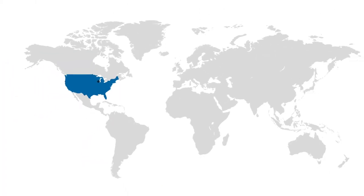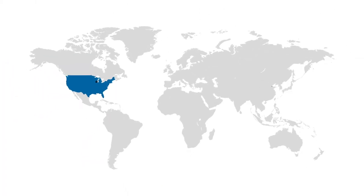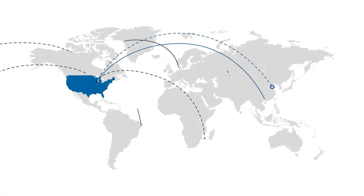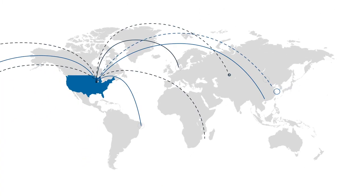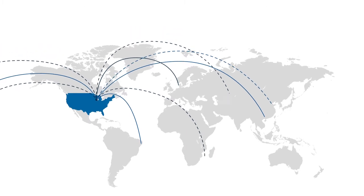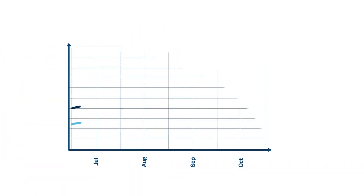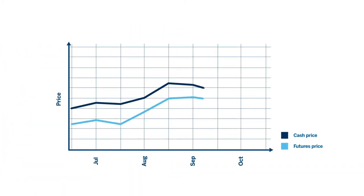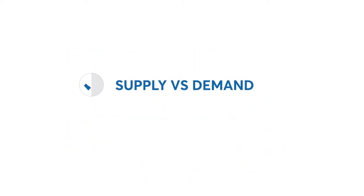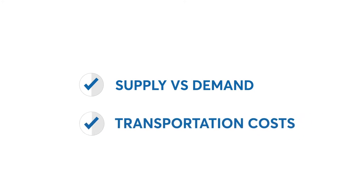All around the globe, market participants trade BASIS to the U.S.-Chicago Board of Trade soybean futures contract. BASIS is the price premium or discount for the physical commodity in a specific location relative to the futures price. It is driven by local supply and demand, as well as transportation costs between markets.